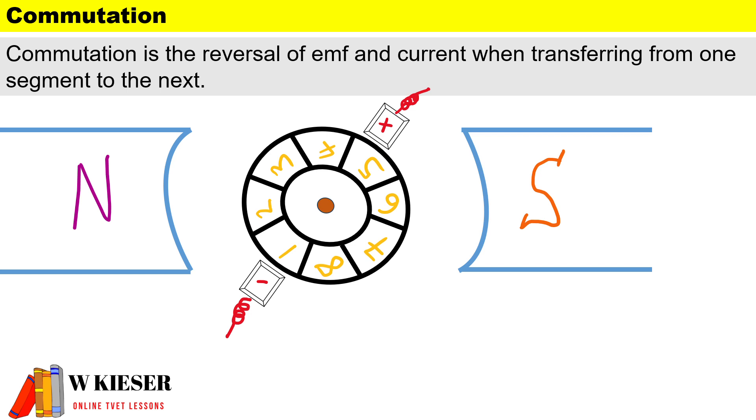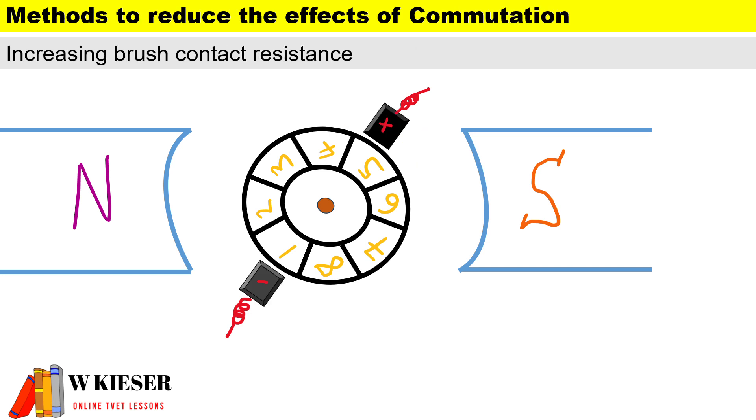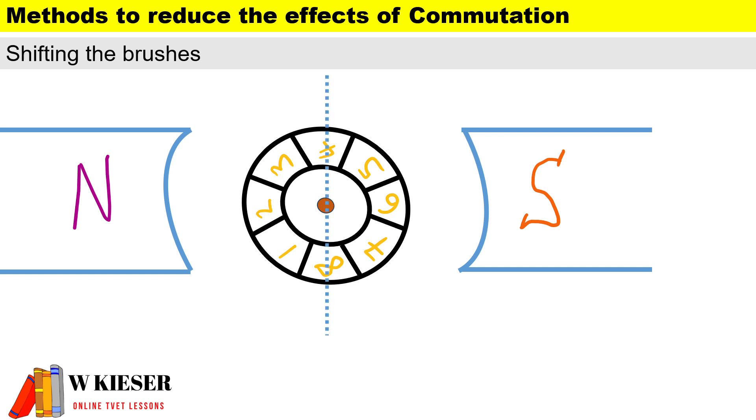The negative effects of commutation are sparking and damage to the commutator surface. Methods to reduce these effects include increasing brush contact resistance - for example, using carbon brushes will help increase the contact resistance. We can also shift the brushes.